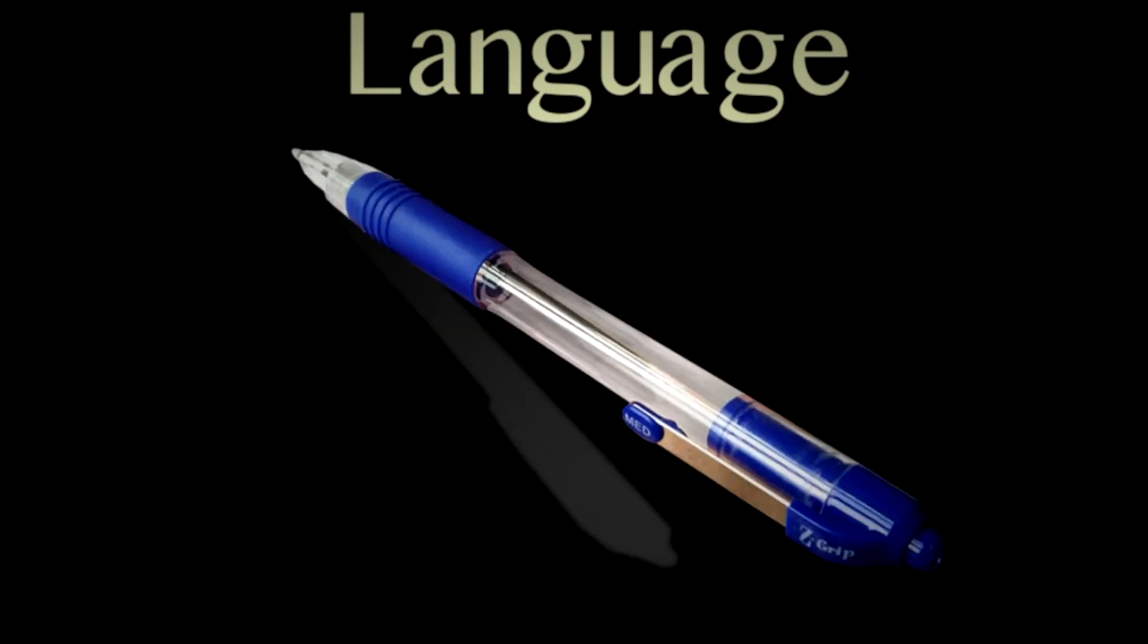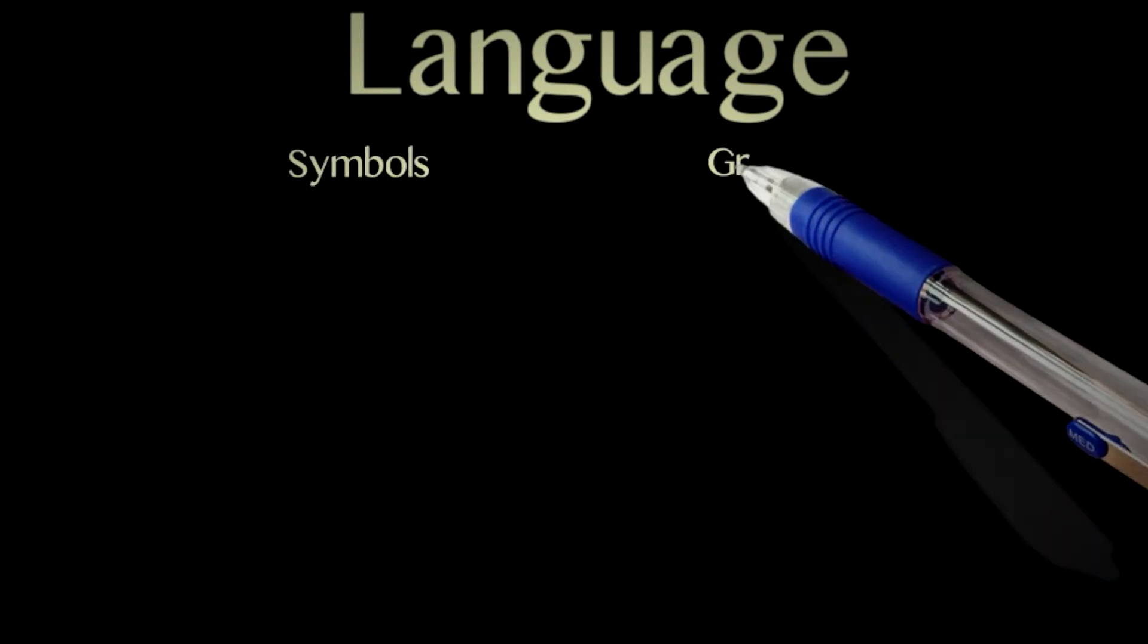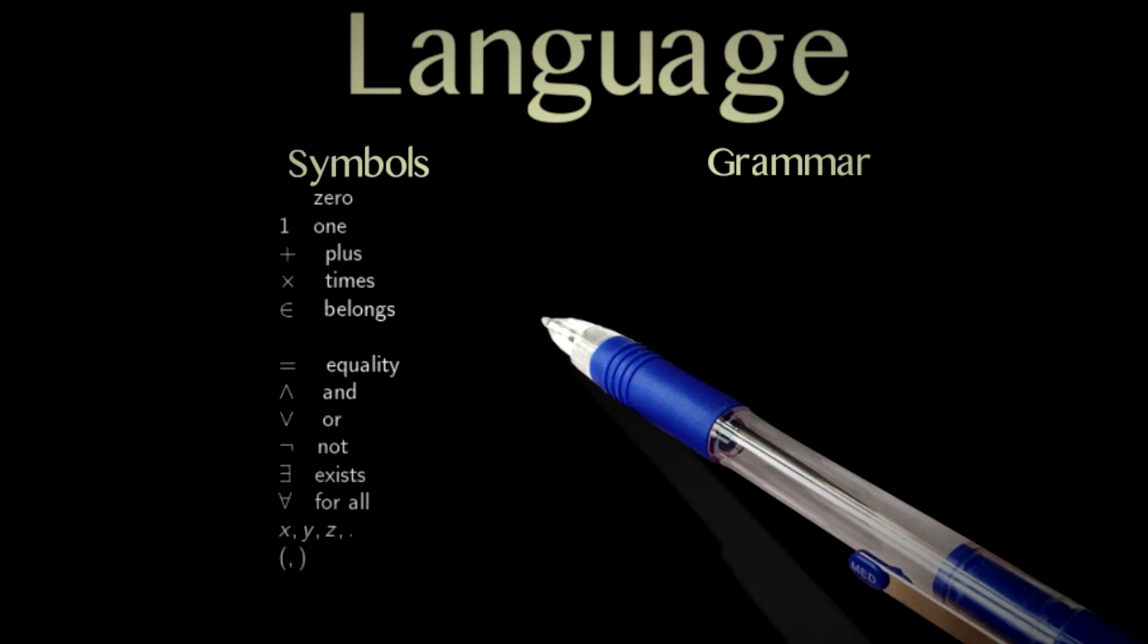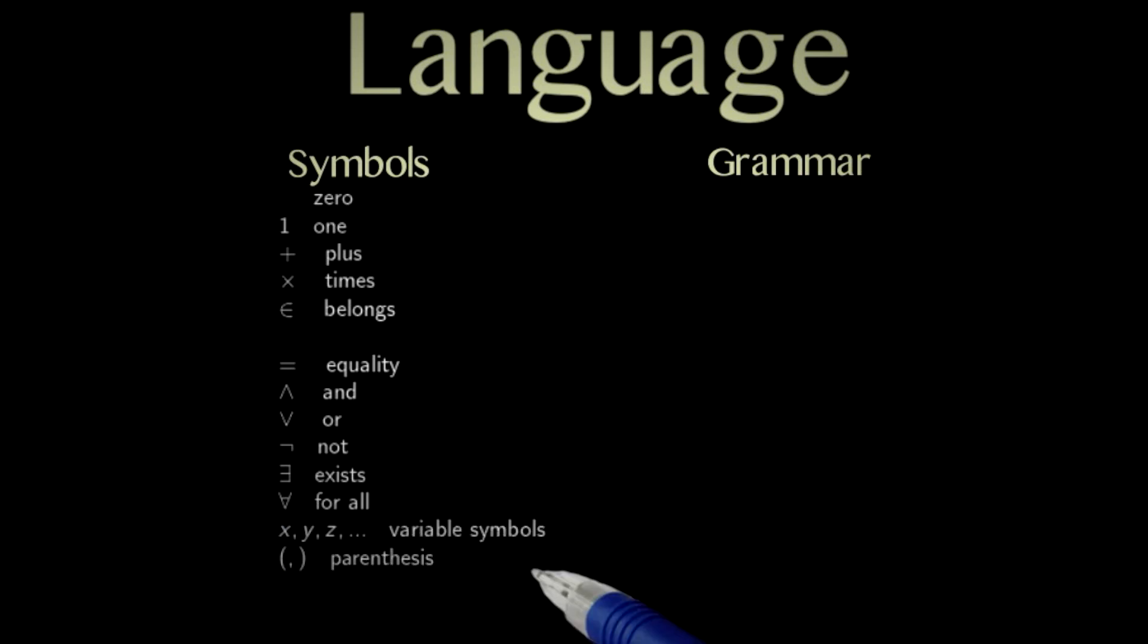The language. To define a language, we need symbols. They are like the letters of the alphabet. And grammatical rules that tell us how to put the symbols together. Here is a standard list of symbols. The first symbols, 0, 1, plus, times, belongs to, form what is called a vocabulary.